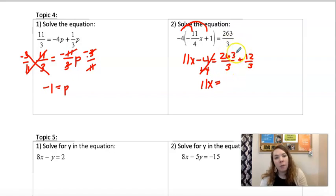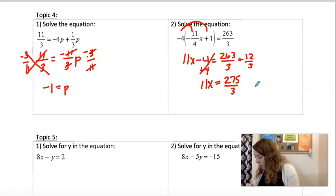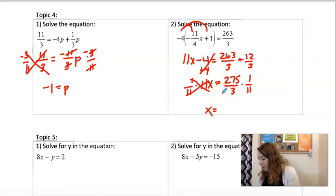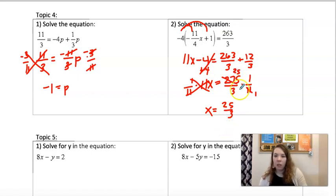So 12 more would be 275/3. Let's see. Does that simplify? Nope. 275/3. And then you can multiply by 1/11 if we want to stick with fractions here. So 275 over 33 simplifies to be 25/3. You could cross simplify here, it looks like.